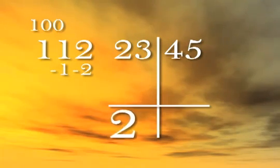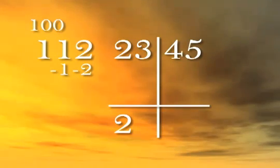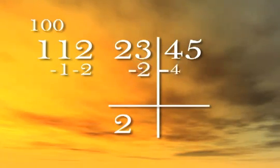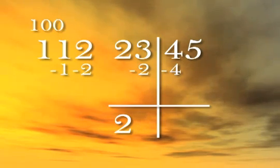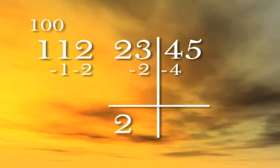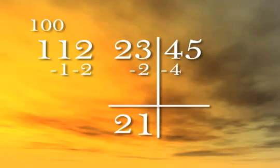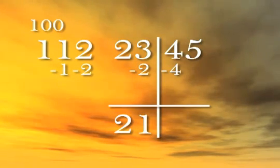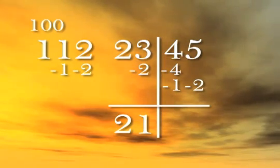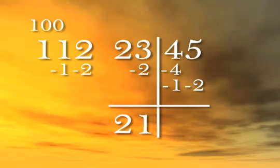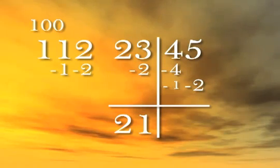Bring down the two. Two times negative twelve is negative twenty-four, which we start writing in the next column. Instead of writing negative twenty-four, we write negative two, negative four. We need to indicate that each digit is negative because shortly we'll be tallying in columns. The next step: three minus two is one. One times negative twelve is negative twelve, which we write in the next column over as negative one, negative two. We've made it all the way to the last column, so let's tally up. Four minus four equals zero, minus one equals negative one.